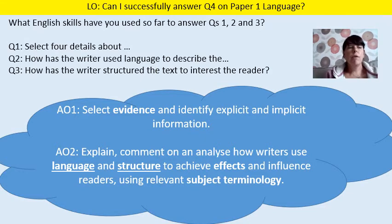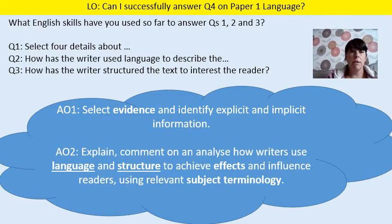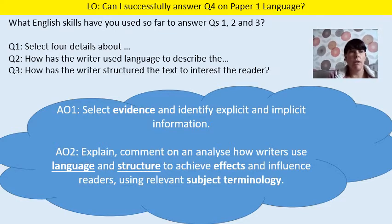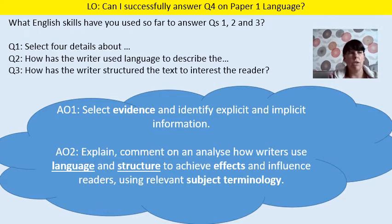Hopefully you will have recognised that the things that you've done so far in order to answer those three questions is you've used the skill of being able to select evidence from the text, to find the right quotes to back up or support the question that you're answering. That's Assessment Objective 1 — select evidence and identify explicit and implicit information. Remember, question 1 is just select and retrieve.